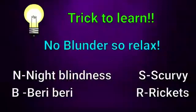And now the trick to learn — 'No Blunder So Relax.' N stands for night blindness, B stands for beriberi, S stands for scurvy, and R stands for rickets. So easy to remember!